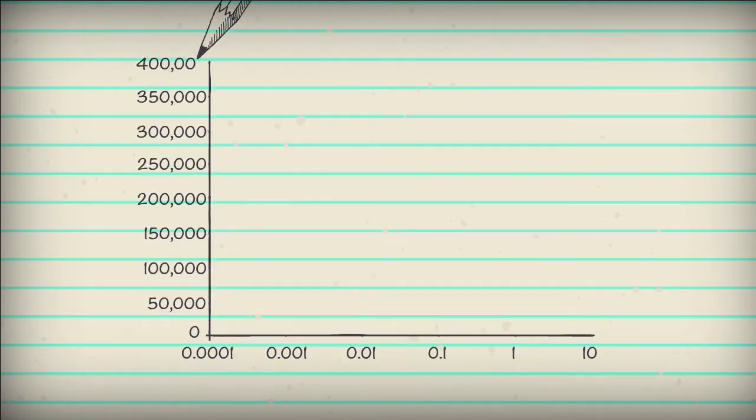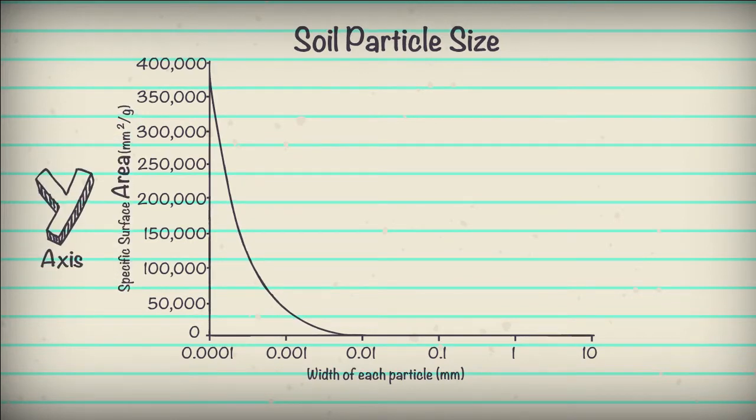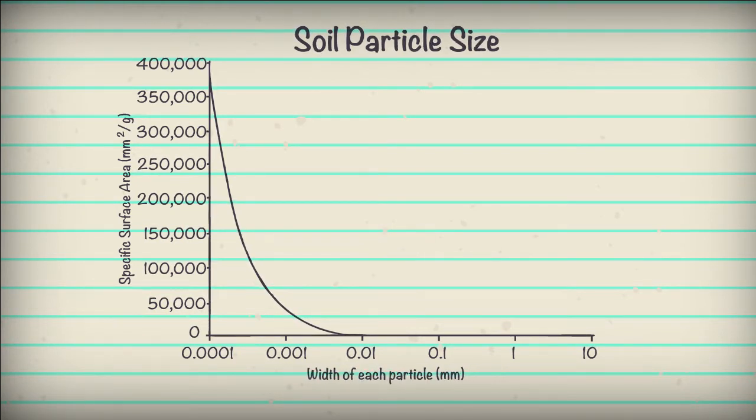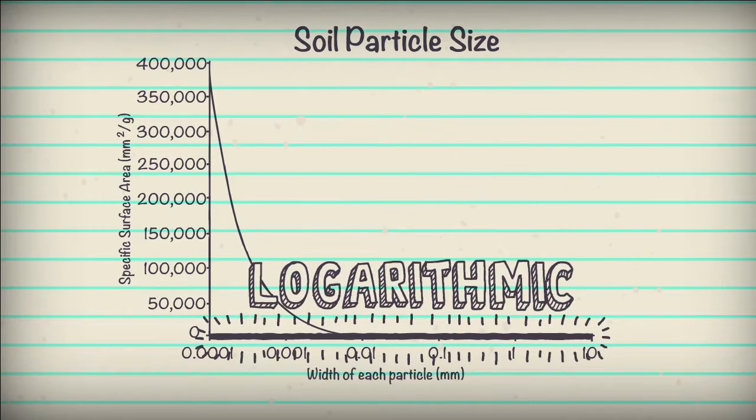This graph shows us the particle surface area in relation to the particle size. The y-axis measures the specific surface area of each particle. The x-axis keeps track of particle size, expressed as a particle's diameter or width. As the y-axis increases by 50,000 with each notch, which means we multiply each notch by 10. And we know multiplicative means logarithmic. So particle size on the x-axis is logarithmic.